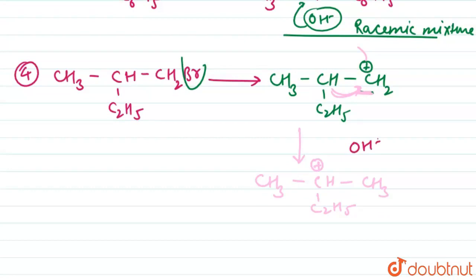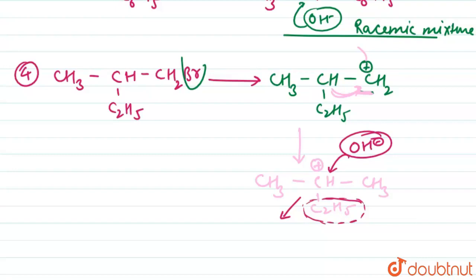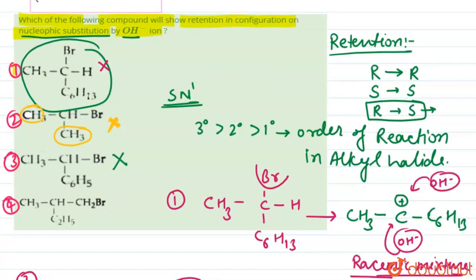When OH⁻ attacks the 3° carbocation, steric hindrance is present on one side, so OH⁻ can only attack from one specific side. This means the compound retains its original configuration — R or S — and does not form a racemic mixture. Therefore, option number four is the correct answer: it shows retention in configuration upon nucleophilic substitution by OH⁻ ion.